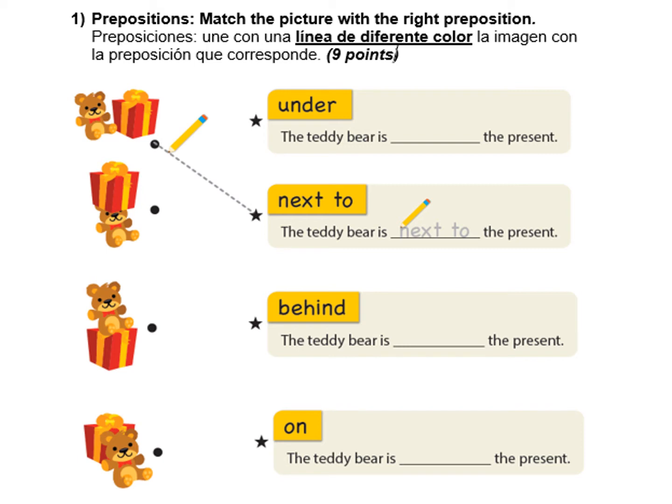Ahí abajo la oración me dice: the teddy bear is next to the present. O sea, yo sé que ese osito, ese teddy bear, está al lado del regalo o del present. Por lo tanto, ustedes ahora van a tener que ver cuál es la posición en la que se encuentra el osito y unirla con la oración que corresponde. La primera parte me aparece under, luego me aparece behind, y por último me aparece on.